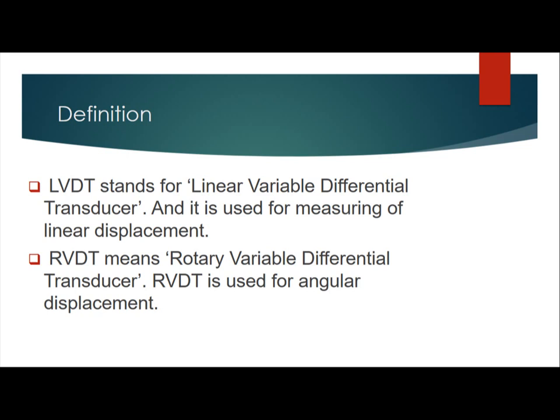D stands for differential. Differential means not one in the middle. And T stands for transducer. The transducer receives AC input and gives AC output. So LVDT is Linear Variable Differential Transducer, and the main function of LVDT is measuring of linear displacement.